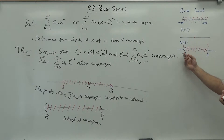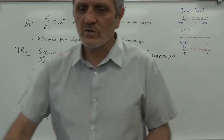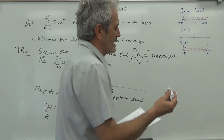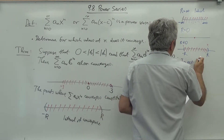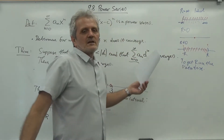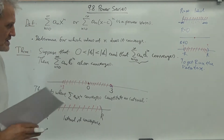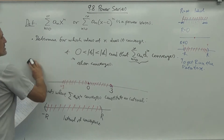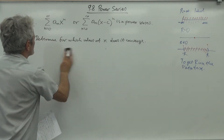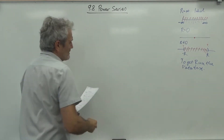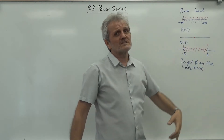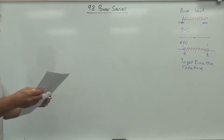To determine R, we use the ratio test. This is just an application of what we learned before — it's more like an exercise in the ratio test. All the discussion so far was about power series centered at zero. If it is centered at c, the whole story shifts to be centered around c, as we will see from examples.